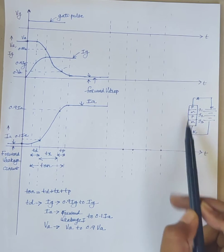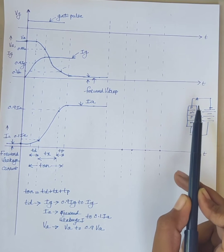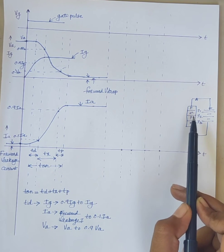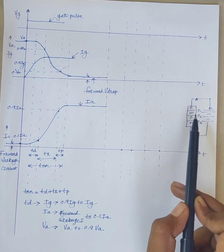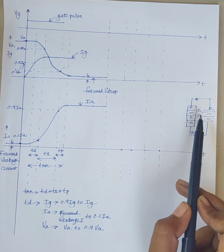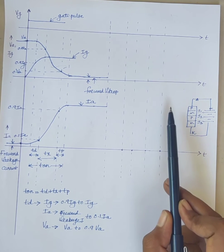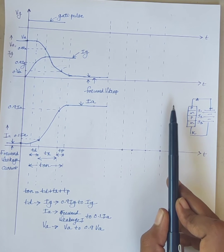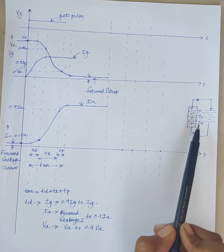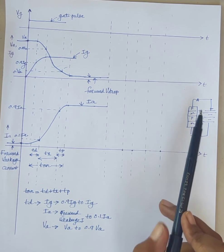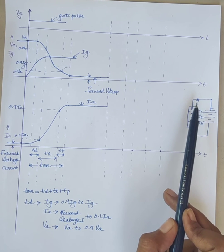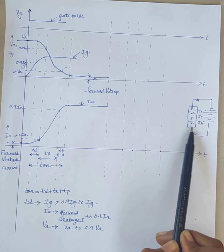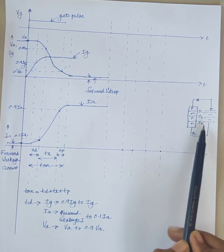On the basis of removing charge carriers from the four layers, turn off time of SCR can be divided into two regions. First one is reverse recovery time and second one is gate recovery time. Reverse recovery time is the interval in which charge carriers remove from outer P layer and N layer when we apply reverse voltage.